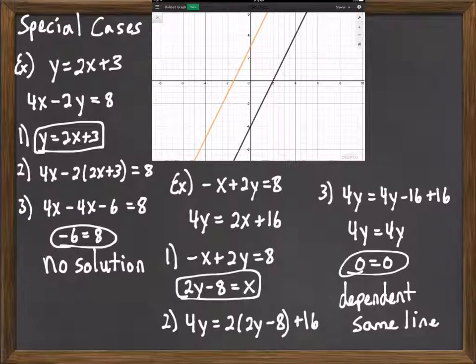That's our indication that this is a dependent system. In other words, if you were to graph those two equations, you'd find out they are in fact the same line. They actually have the same slope and the same y-intercept. If you were to solve both of those equations for y, you would actually get the same equation for both of them.